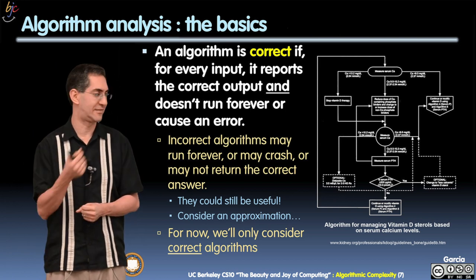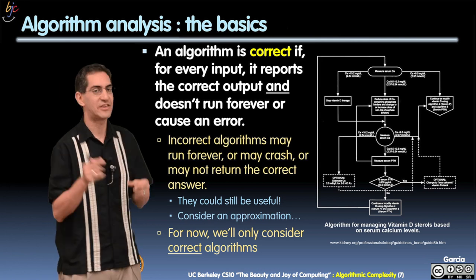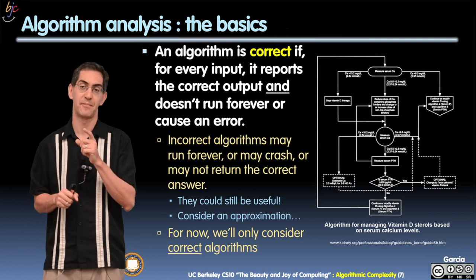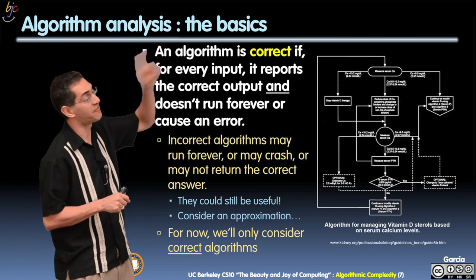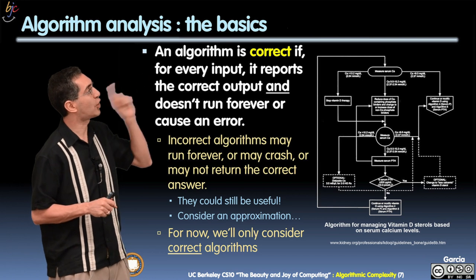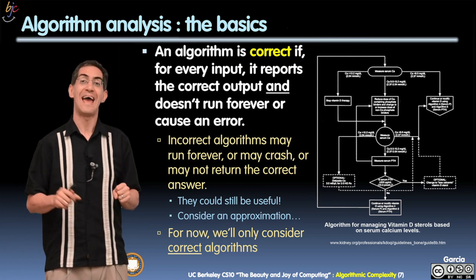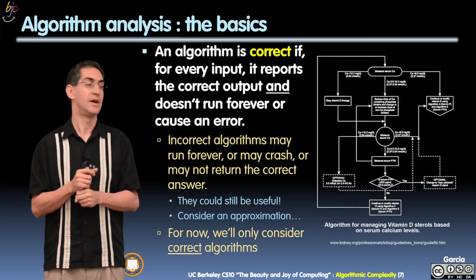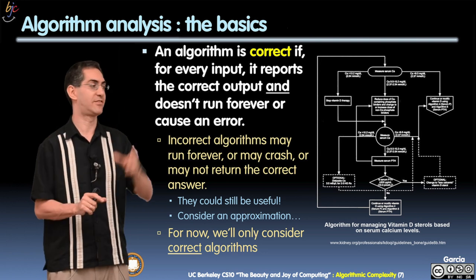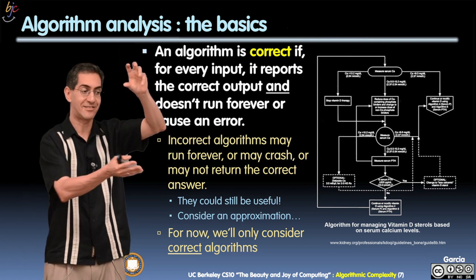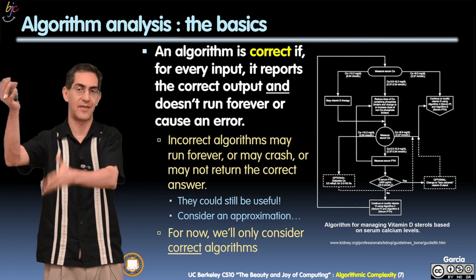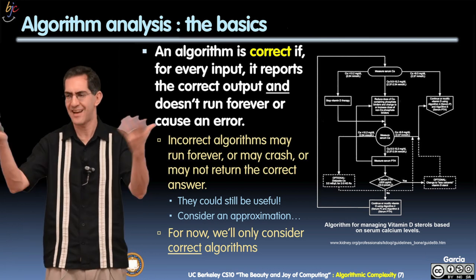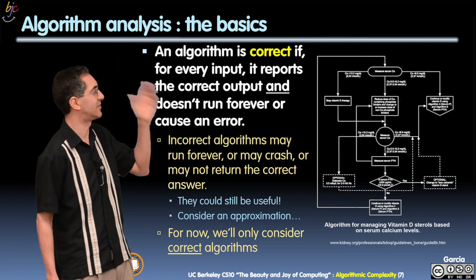So algorithmic analysis. We're agreed that there's a common definition. An algorithm is correct if for every input it reports the correct output and doesn't run forever or cause an error. It is correct if for every input it gives a correct answer and never does the bad thing, where the bad thing is crash or run forever. So correct means works for all the inputs, doesn't do bad things.